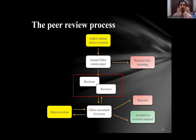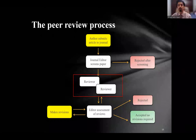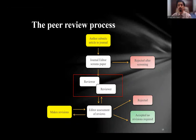Different journals have different peer review processes because they have different structures — some have editors-in-chief, associate editors, and editorial boards. Generally speaking, after the author submits an article, the journal editor screens the paper for plagiarism and checks that the content aligns with their aims and scope, then sends it to two reviewers — sometimes three. Depending on the reviewer's comments, the editor makes a decision for rejection or requests more revision, may bring in a third reviewer, and finally the paper could be accepted.